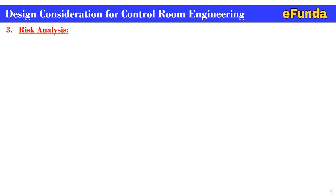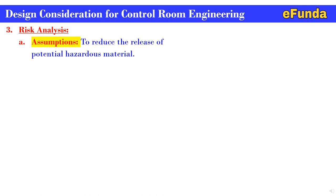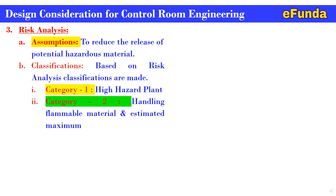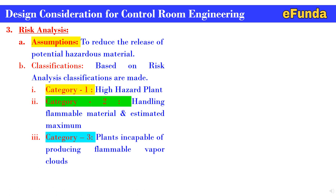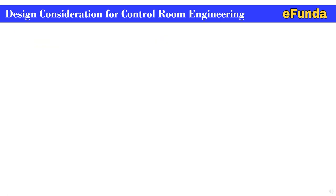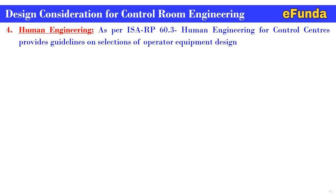The location of the control room is critical from an operator movement point of view. Plant managers are generally opposed to the control room being too remote. Regarding risk analysis, assumptions are made to reduce the release of potential hazardous material. Classifications are made as: Category 1 — high hazard plant; Category 2 — handling flammable material estimated as maximum; Category 3 — plants incapable of producing flammable vapor cloud.